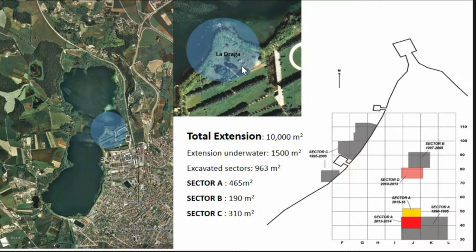The total extension of the Neolithic occupation settlement was calculated at 10,000 square meters, 1,500 of which are currently underwater. The excavated sectors are Sector C, the one underwater currently, Sector A, excavated in dry conditions, and Sector B, into the water table as well.